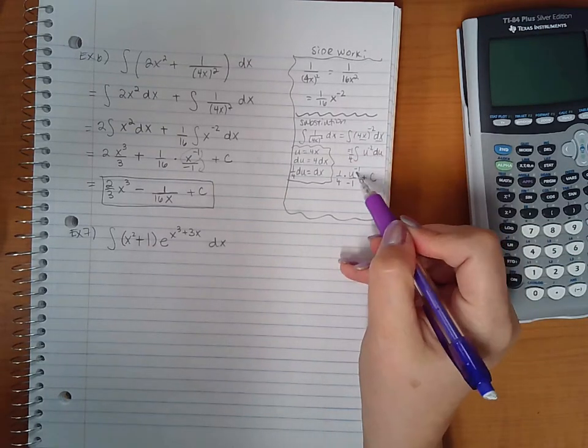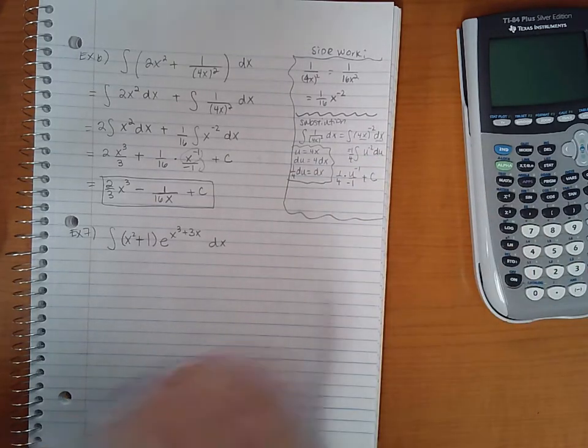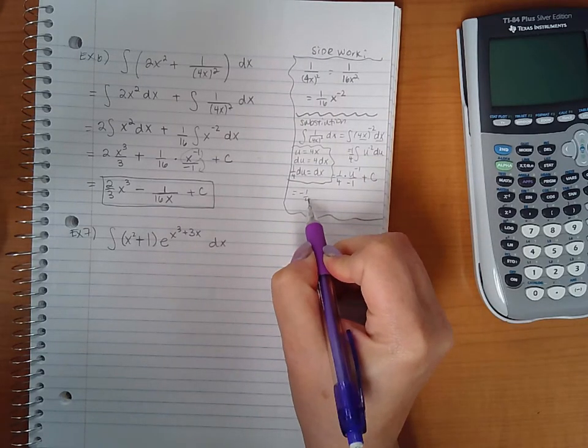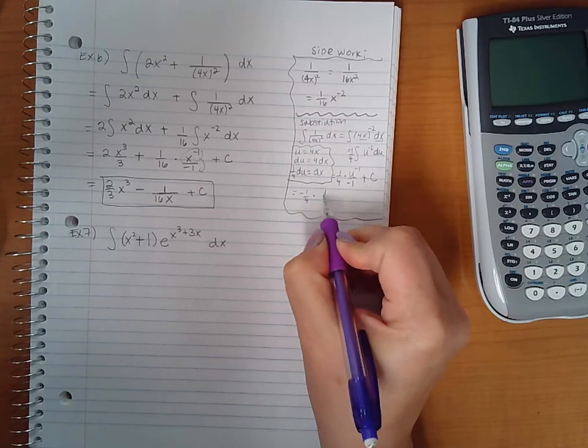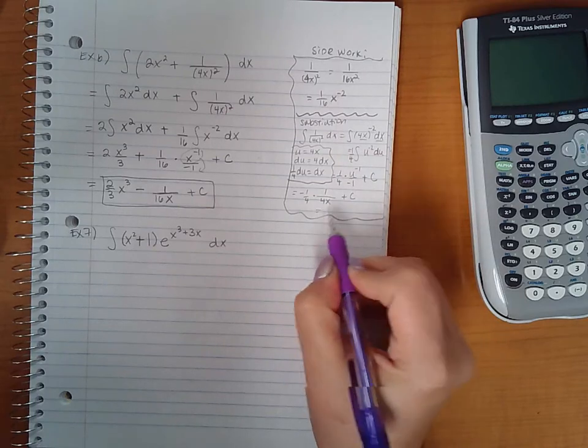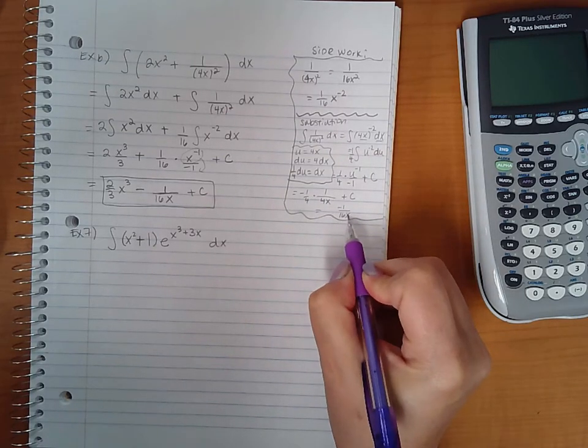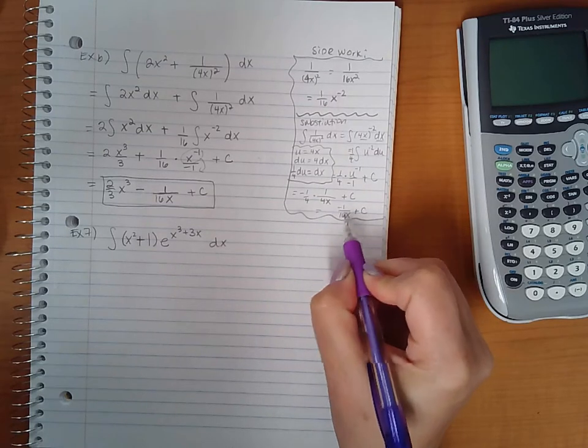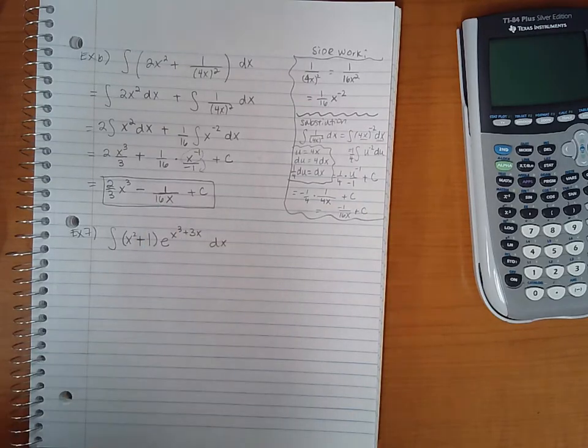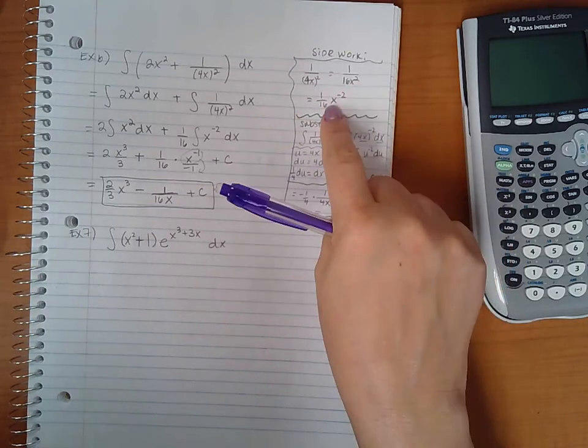So add one to the power, divide by the new power, and then I tag on my plus c because I've applied my integration rule. And then I'm going to back sub, so this becomes negative one fourth times one over u, and u is 4x, plus c. Well, one fourth and one over 4x become one over 16x, negative one over 16x, which is exactly what we have here.